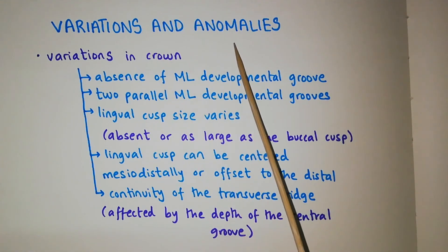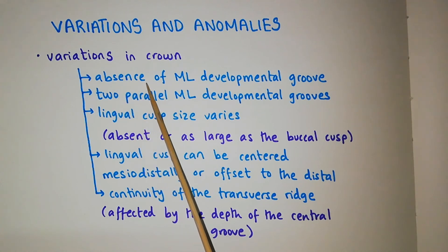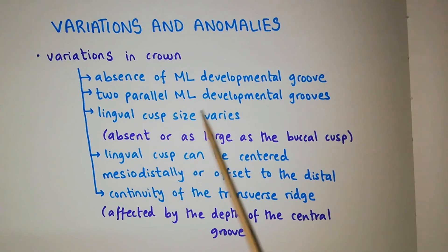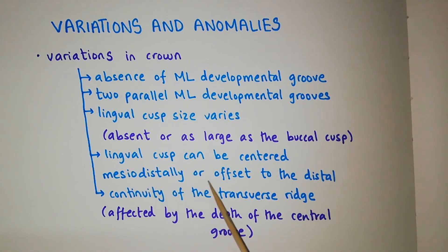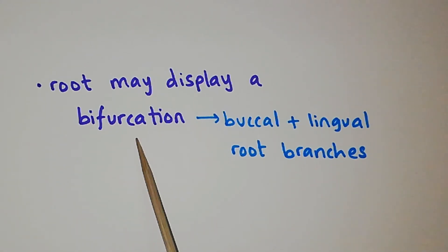Coming to the variations and anomalies, there are a lot of variations in the crown. These include the absence of the mesio-lingual developmental groove, or two parallel mesio-lingual developmental grooves. The lingual cusp size varies: it may be absent or may be nearly as large as the buccal cusp. The lingual cusp can be centered mesiodistally or offset to the distal, though normally it is towards the mesial. There are also many variations in the continuity of the transverse ridge, affected by the depth of the central groove. The root may display a bifurcation, creating buccal and lingual root branches.